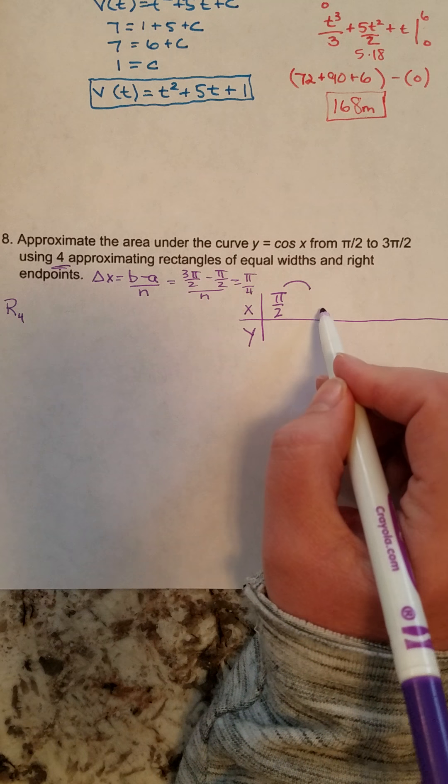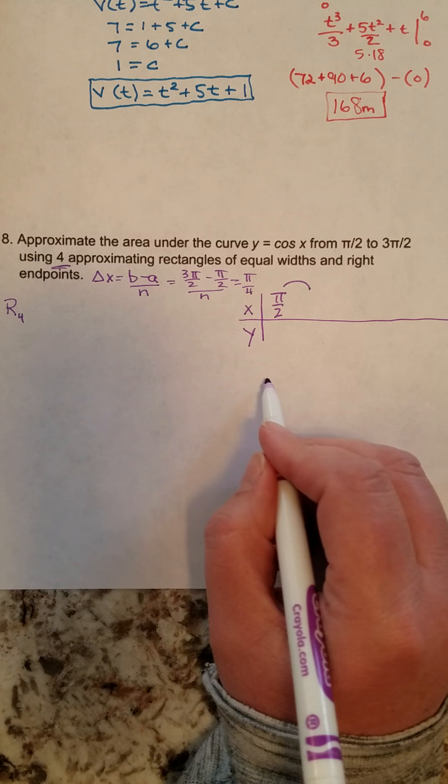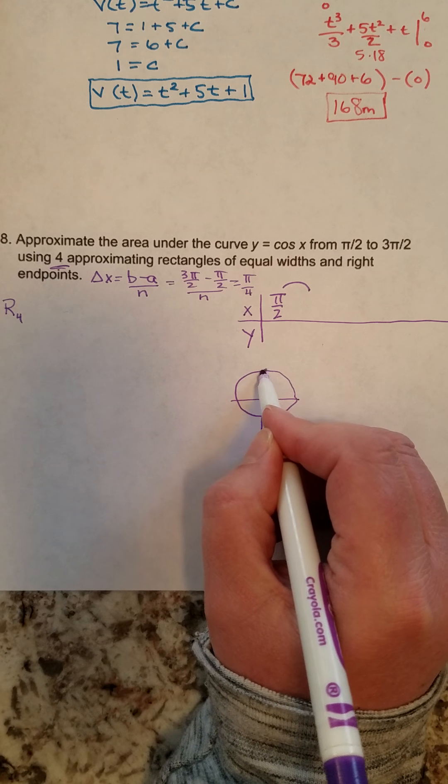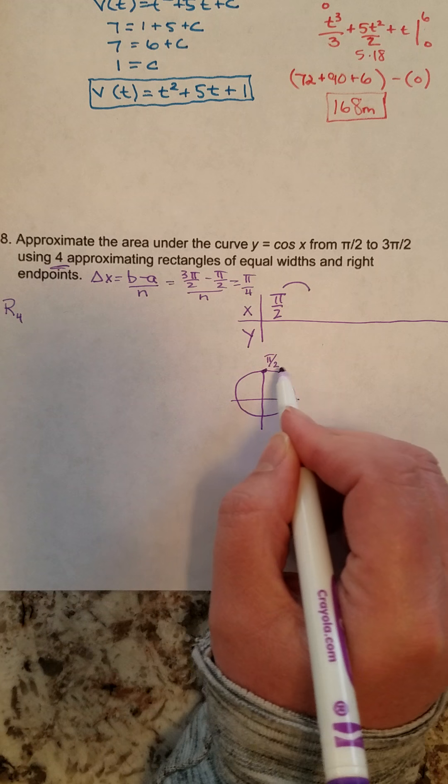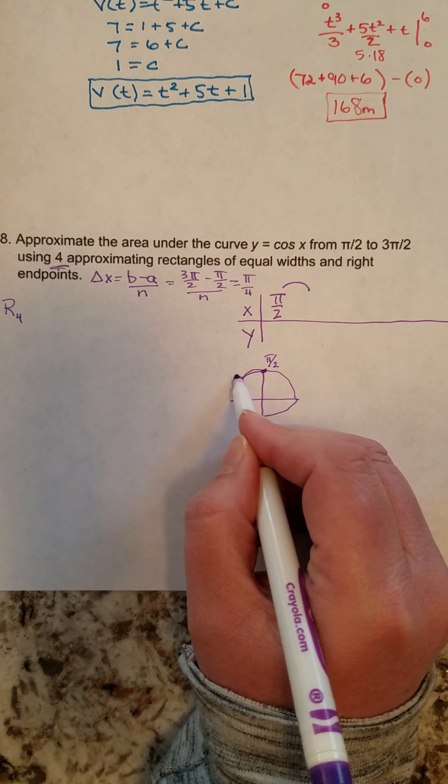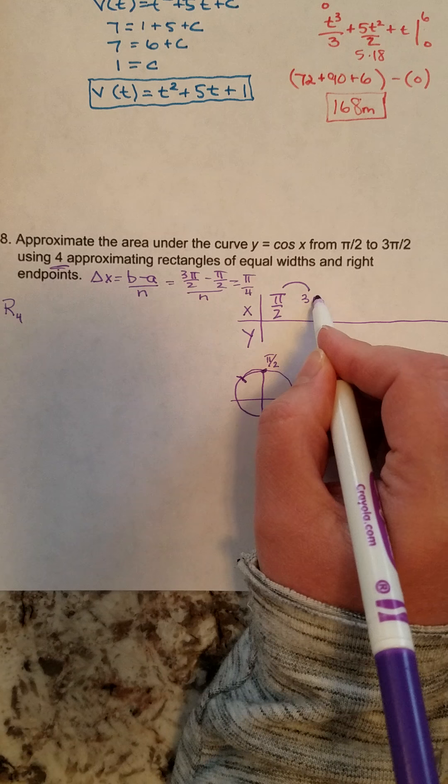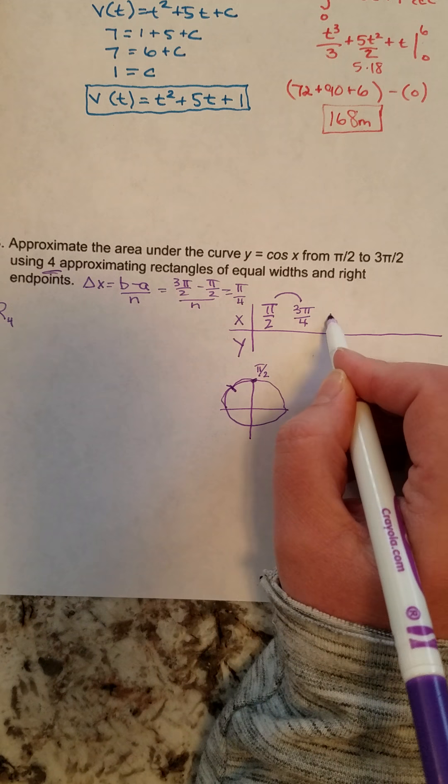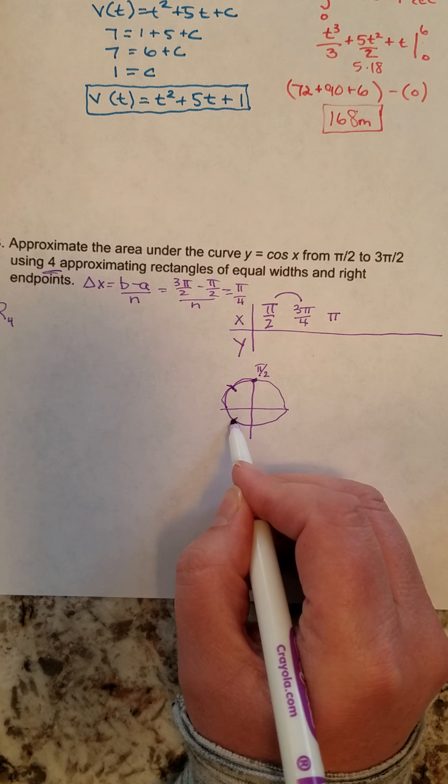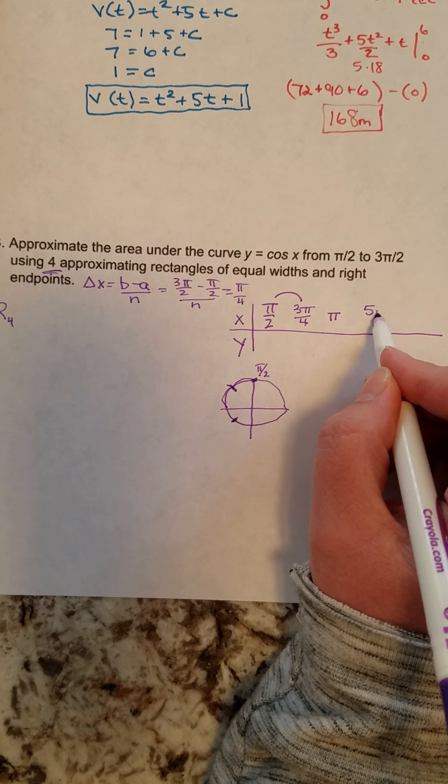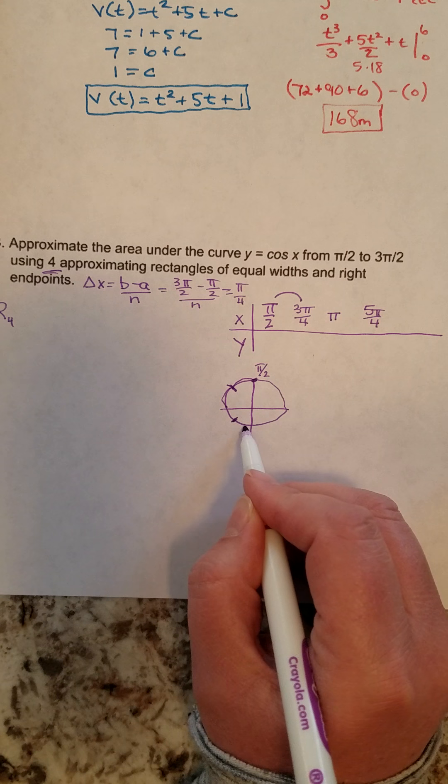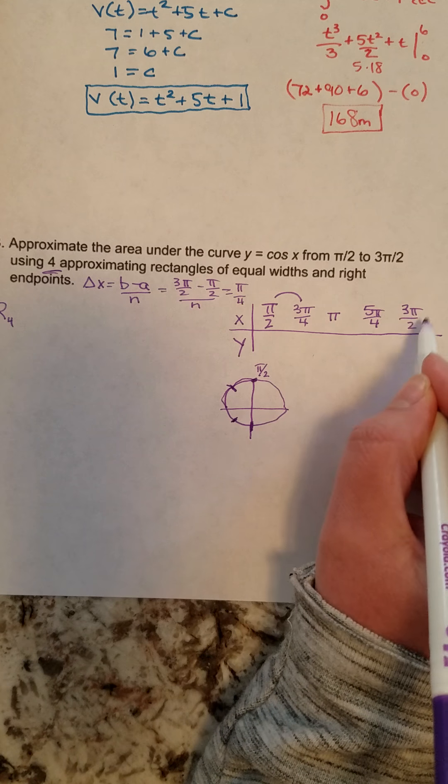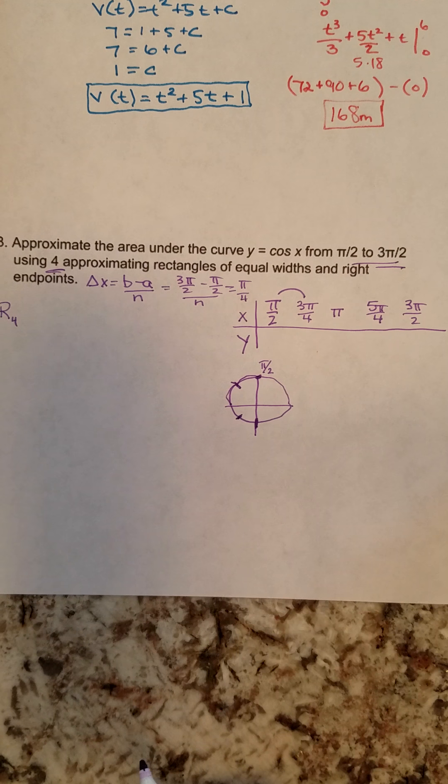And so every pi over 4 units. So if I add pi over 4 to pi over 2, quite honestly, I like to think of my unit circle here. Here's pi over 2. If I add pi over 4 to it, where am I at? And I happen to be at 3 pi over 4. Now when I add pi over 4 to that, where am I at? I'm at pi. Add pi over 4 to that, I'm at 5 pi over 4. And add pi over 4 to that, I'm down here at 3 pi over 2, which actually is exactly the endpoint that I'm supposed to stop at.